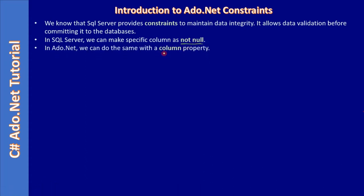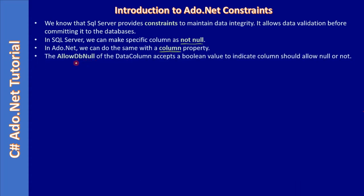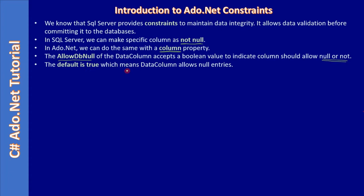In ADO.NET we can do the same with a column property. The AllowDBNull property of the DataColumn object accepts a boolean value to indicate whether the column should allow null or not. The default value is true, meaning the DataColumn allows null entries. If you set it to false, the column in the ADO.NET object becomes mandatory, so when tied to the DataGridView the user must provide a value and cannot commit a null entry.